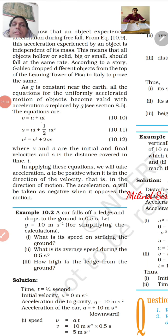As g is constant near the earth, all the equations for the uniformly accelerated motion of objects become valid with acceleration a replaced by g.